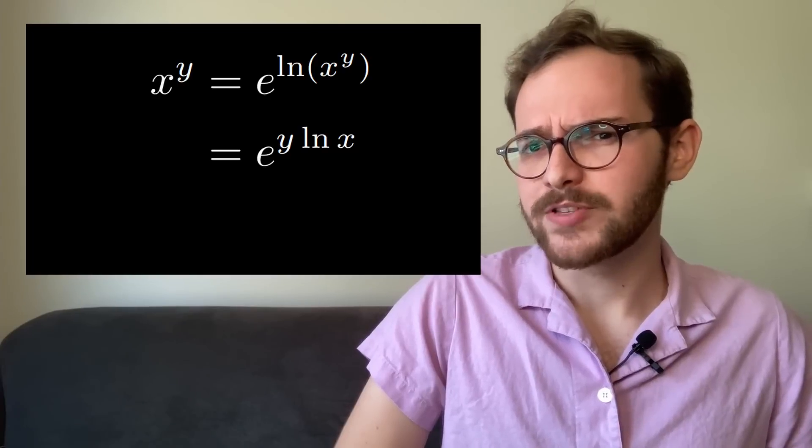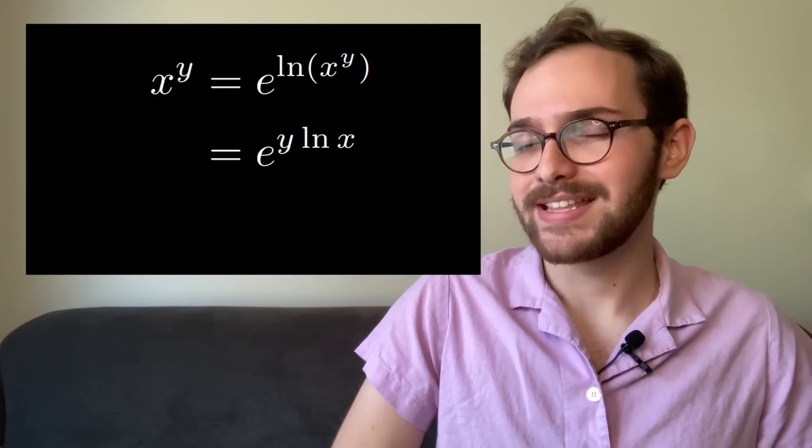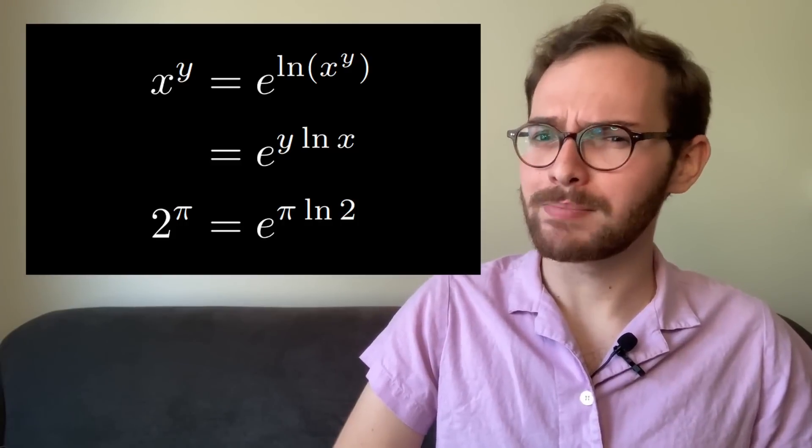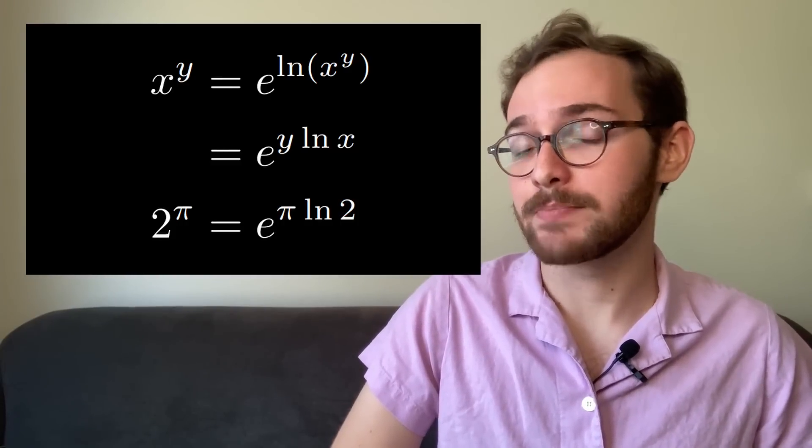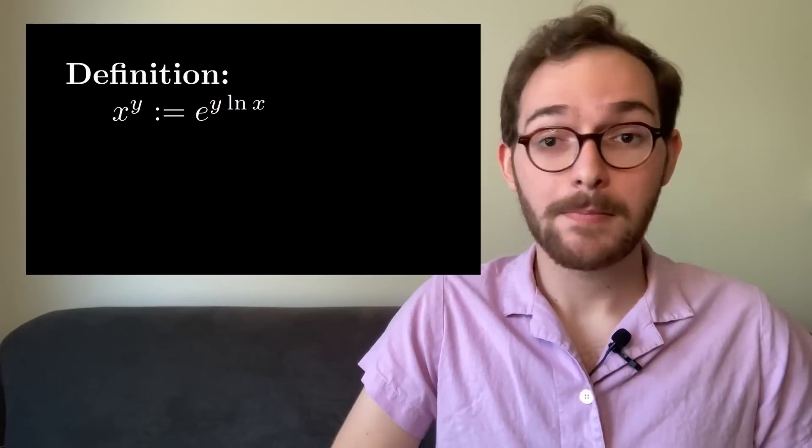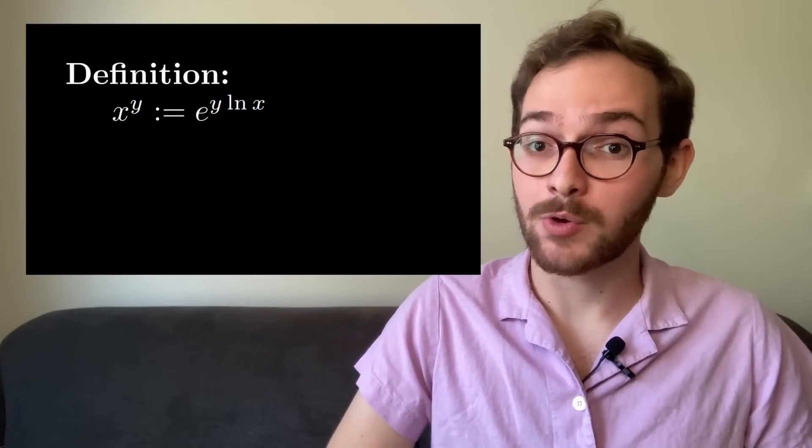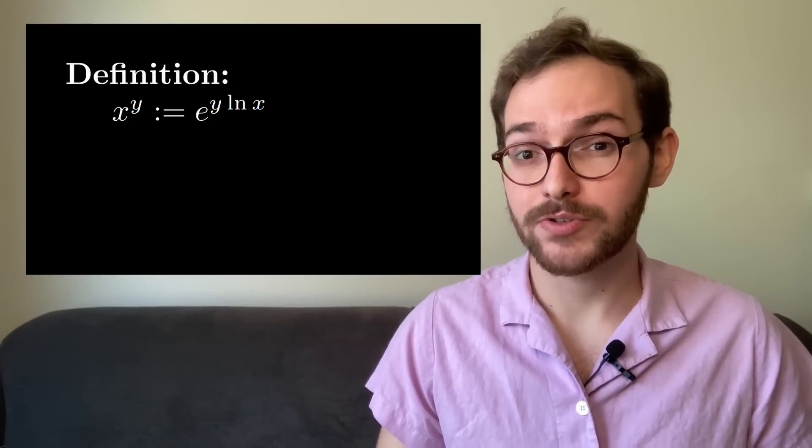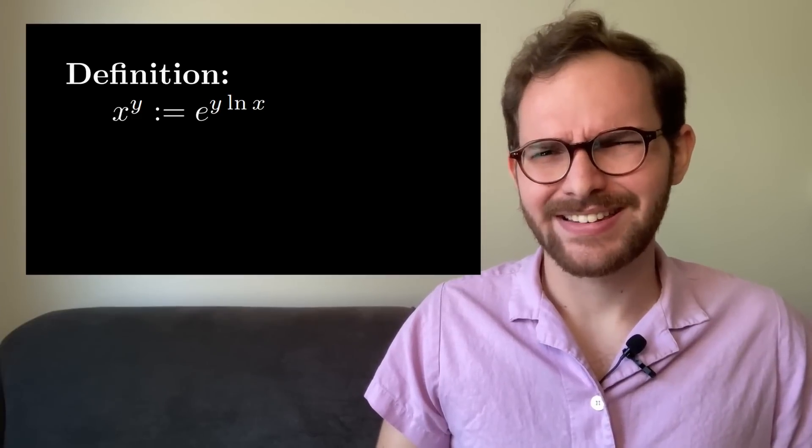This turns out not to be a problem for 2 to the pi, but that's surprisingly hard to prove. Instead, mathematicians found a clever workaround that solves both these problems. Using properties of both exponents and logarithms, we can see that x to the y equals e to the y ln x. So 2 to the pi is equal to e to the pi ln 2. x to the y equals e to the y ln x is actually the definition of exponents that mathematicians use.